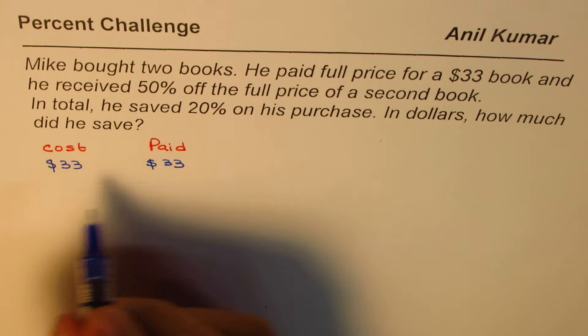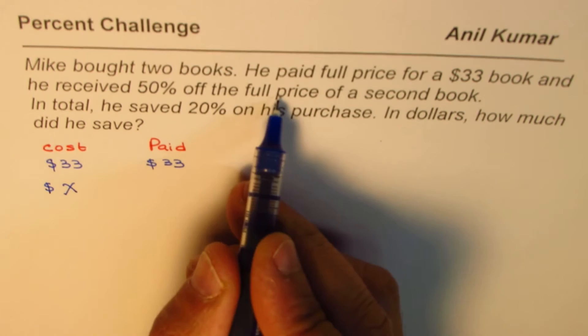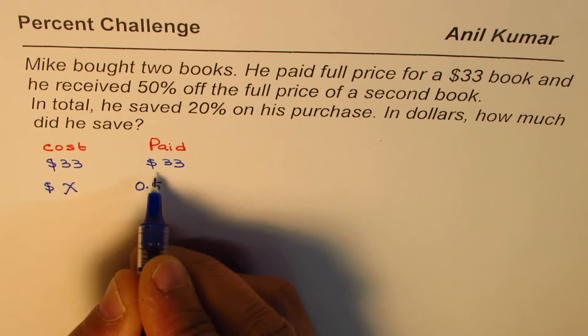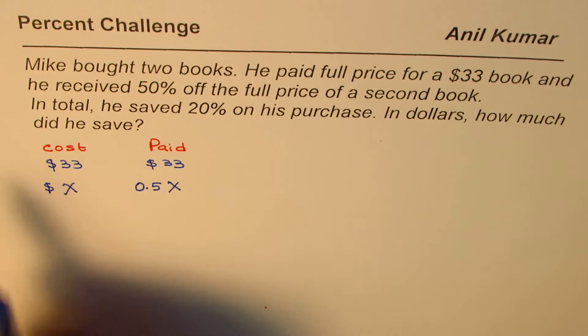The cost of the second book is not known to us — we'll call it x dollars. He paid 50% off the full price, which means he paid 50% of x. That can be written as 0.5x, or equivalently one-half of x. Now, in total he saved 20% on his purchase, so let's write down what his total purchase is.